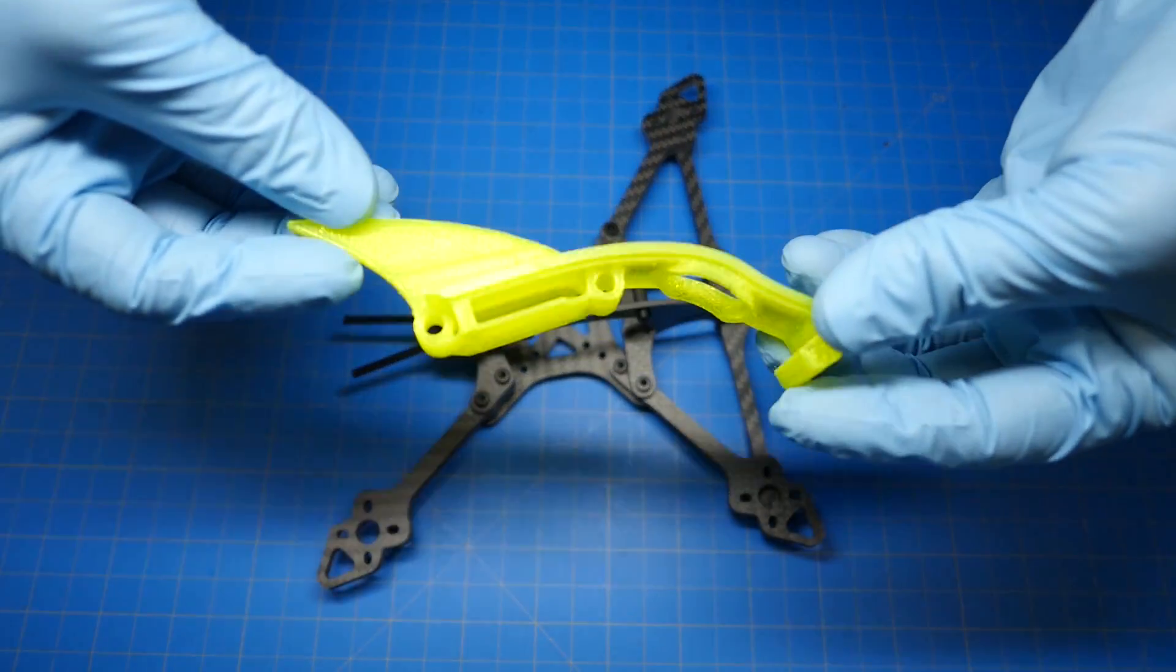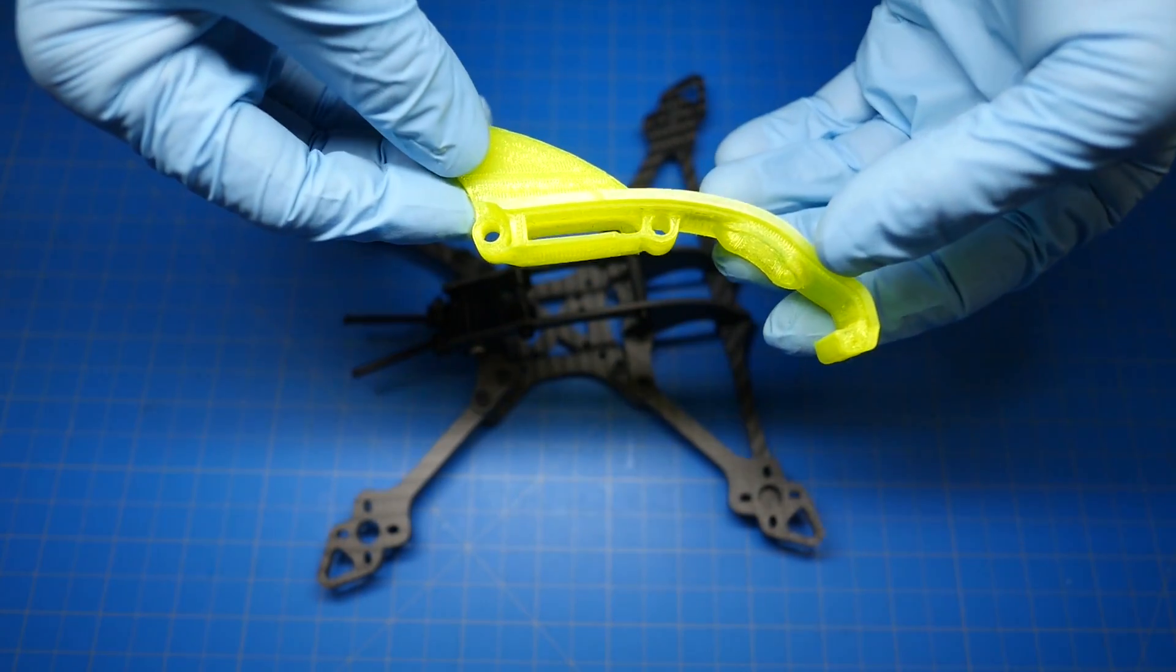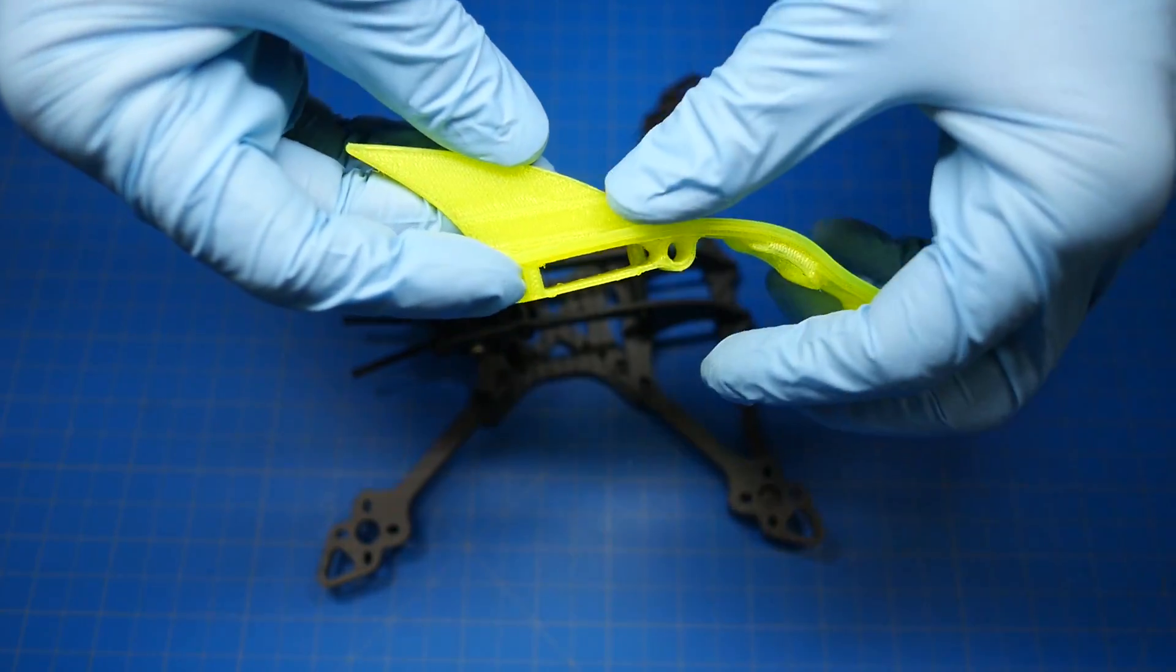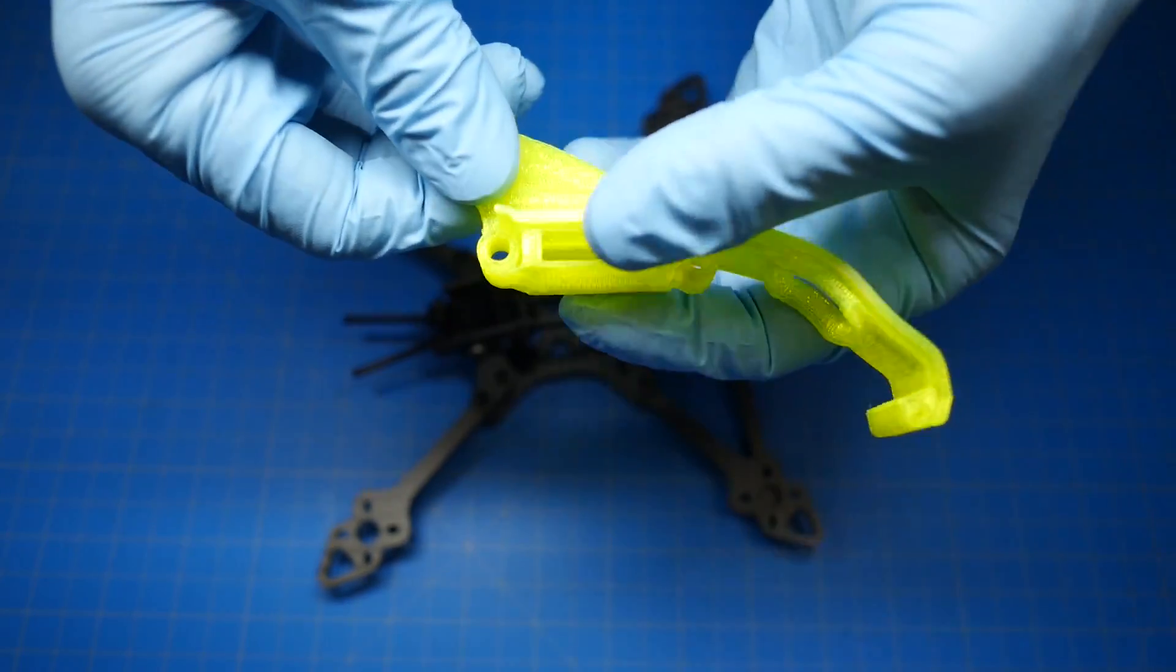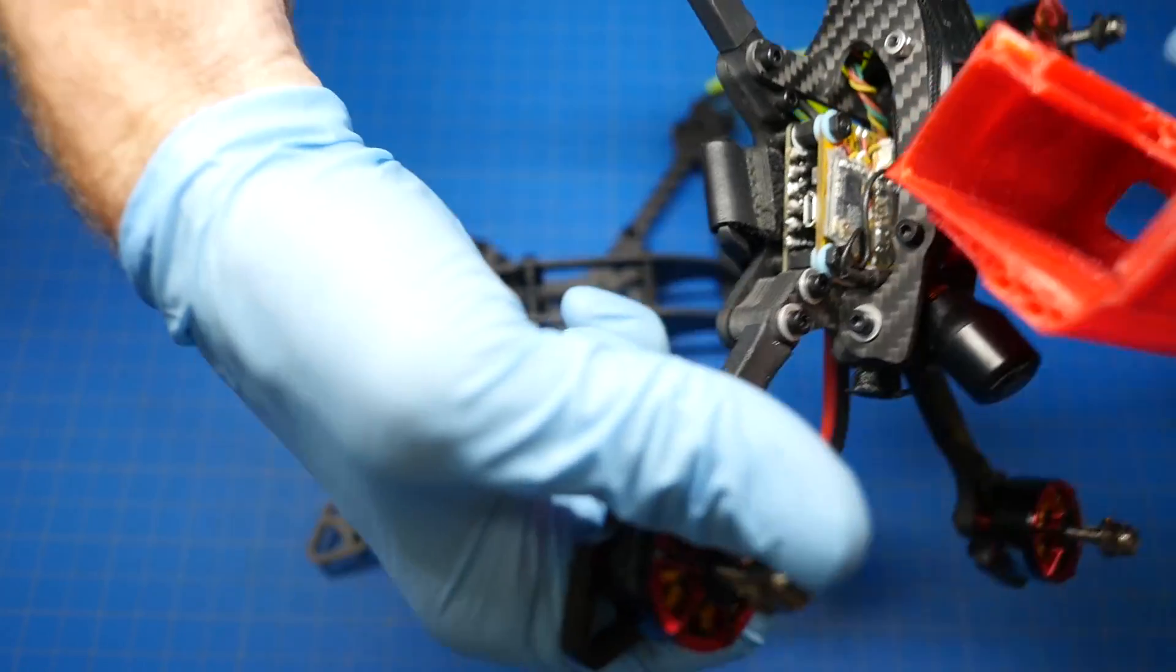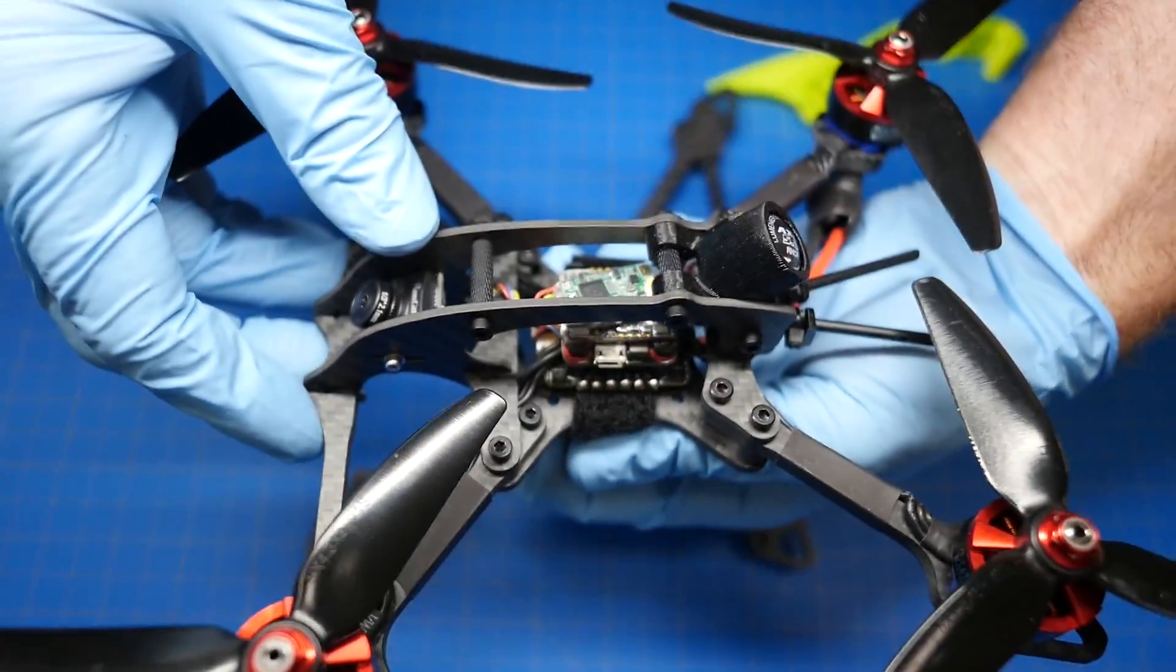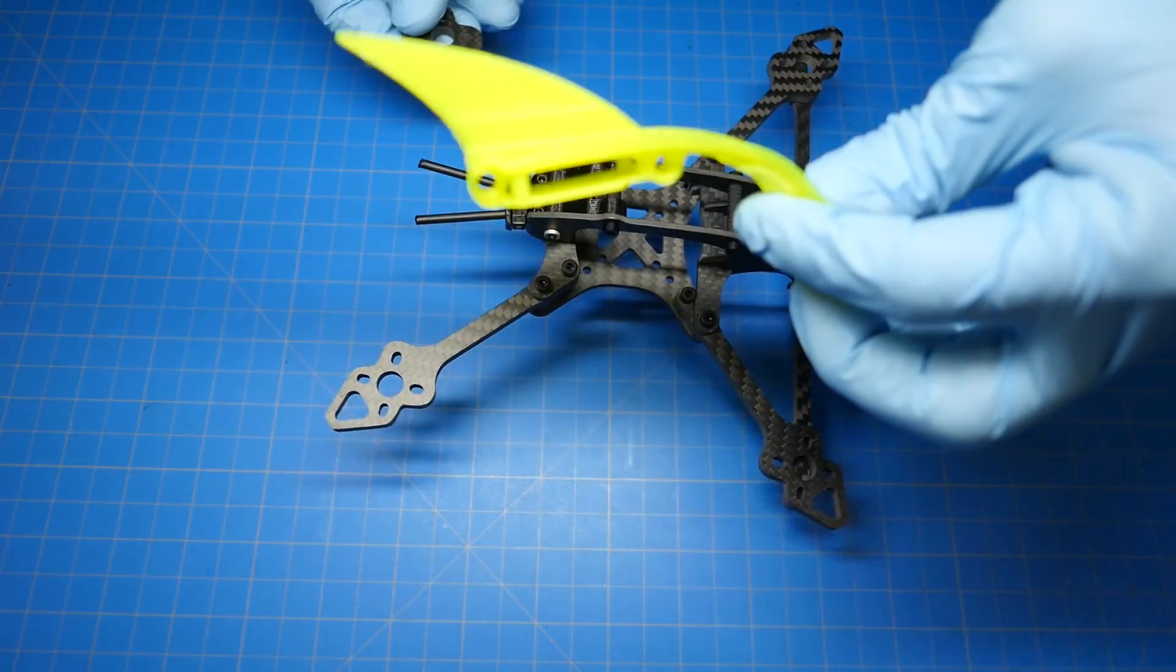One thing I forgot to mention about this canopy is this here, this opening in this little spot, you can put the receiver if you want. Then you can run the wires down through this portion here. All right. So this will fit like an RXSR, Crossfire, XM Plus. I don't know if it'll fit a Spectrum. Those are massive. But that's what that's for. Or you can just do it like this where you've got the receiver sitting on top of the stack. Here's another build. And this is a micro build where we've got the receiver just sitting on top. So however you want to go about it. All right. So that's how that works.